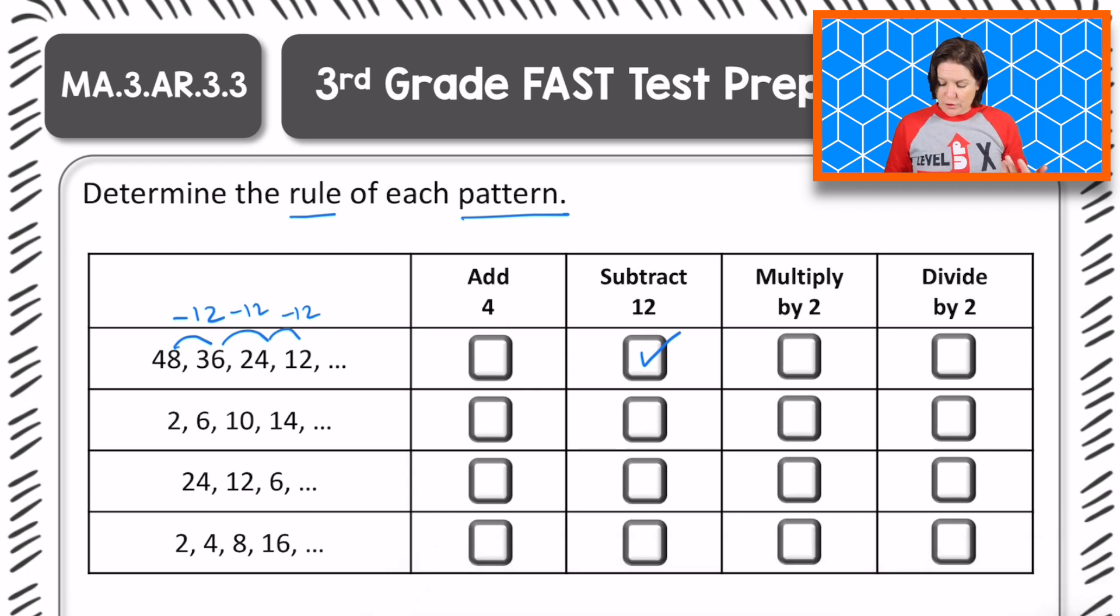From 2, 2 plus what equals 6? Plus 4, right? 6 plus 4, does that equal 10? That works out. How about 10 plus 4? Does that equal 14? It does. So the rule for this pattern is add 4. Let's find that one. If we scan over, add 4 lines up with that one right there. We would mark that answer choice or click it on your computer-based test.